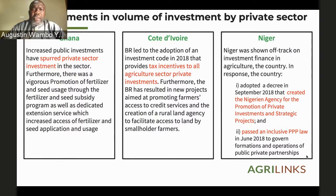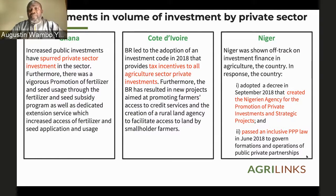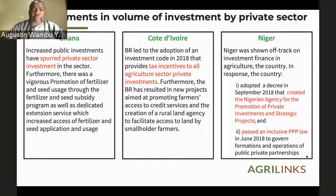The BR was very instrumental in continuing to elevate the advocacy that started back in 2003. As you engage with officials from those countries, you can see they were very sensitive to how their particular country was performing. The government of Cote d'Ivoire appreciated how critical it was to get private sector investment going to sustain transformation efforts already in motion. The tax incentives were based on very convincing arguments put forward by the advocacy work done around the BR. Looking at Nigeria — because the country was completely off track on the commitment on investment finance in agriculture — the country adopted a decree in 2018 creating the Nigerian agency for commercial private sector investment and strategic projects, and also passed an inclusive public-private partnership law.